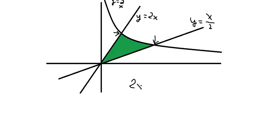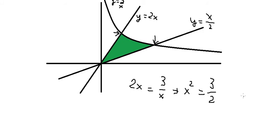For the first intersection, we set 2x equal to 3 over x, so we get x squared equals 3 over 2, and we get x equals the square root of 3 over 2.